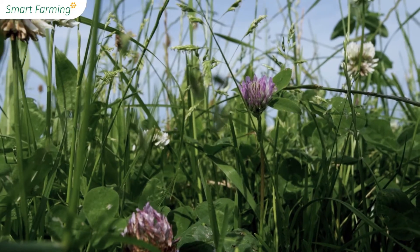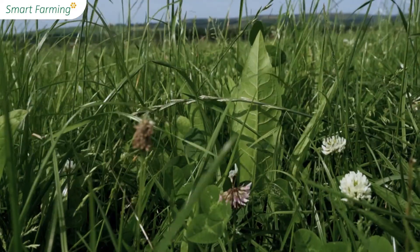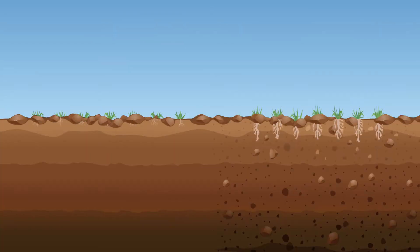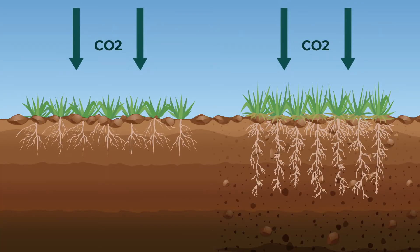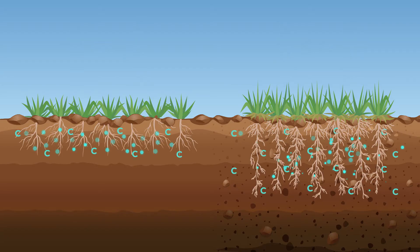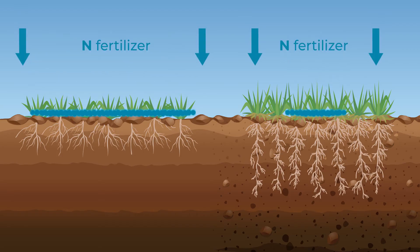By incorporating clover and other deep-rooting grass species such as chicory and plantain, you can increase the amount of carbon stored deep in your soil. These deep-rooting species can also help reduce nitrogen leaching.